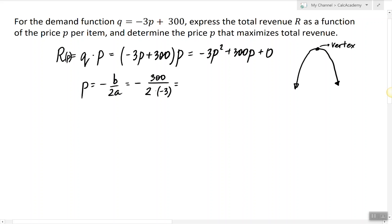So by plugging in the values into this formula, we get that the p-coordinate of the vertex is 50.